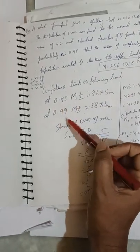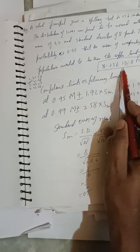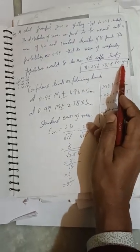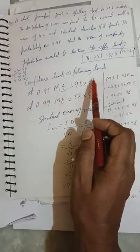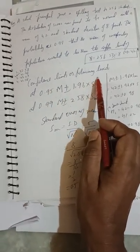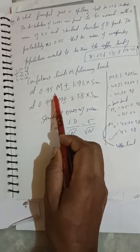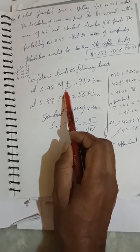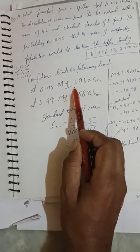The probability is 0.95 that the mean of corresponding population would be less than the upper limit of... In this case, given: n = 256, standard deviation = 8, mean = 42. We need to find confidence limits or fiduciary limits. The formula at 95% is m ± 1.96 × standard error of mean.